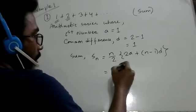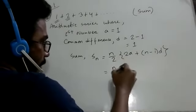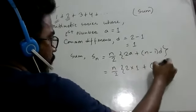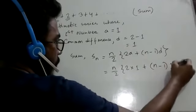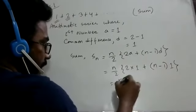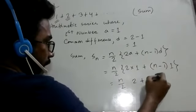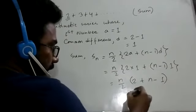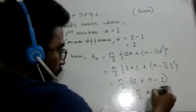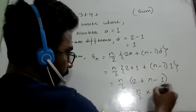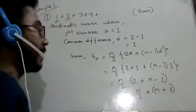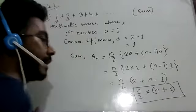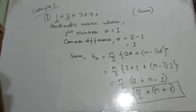I will explain. n by 2 into twice a — a means 1 — plus n minus 1 into d — d means 1. So, n by 2 into 2 plus n minus 1. The sum of n is equal to n by 2 into n plus 1. This is the result.